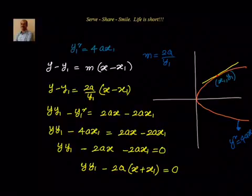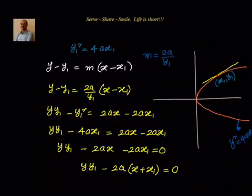So what have we done? We know the equation of the parabola and we have to find the tangent at a particular point x1, y1. We know the point and we have to find the slope. To find the slope we took the equation of the parabola and differentiated it. We found slope equals 2a by y, and at the particular point x1, y1 the slope is 2a by y1. Now knowing both the point and the slope, we substituted and obtained the equation of the tangent to the parabola at point x1, y1.